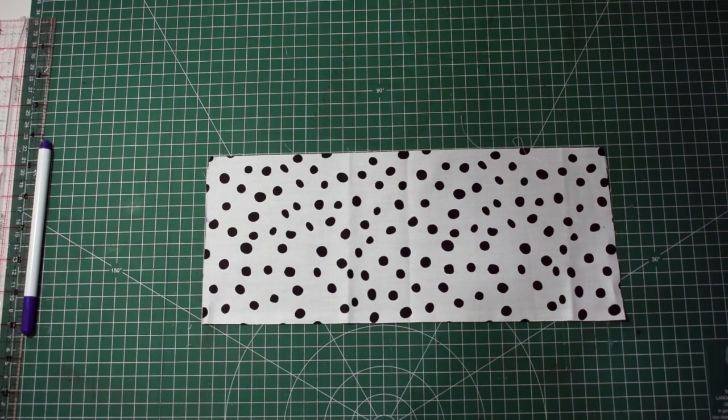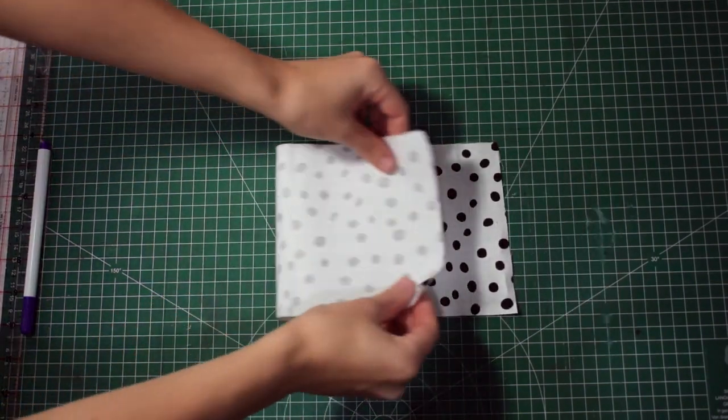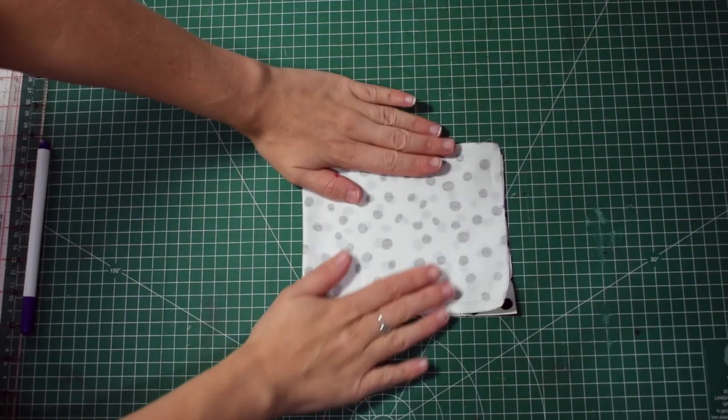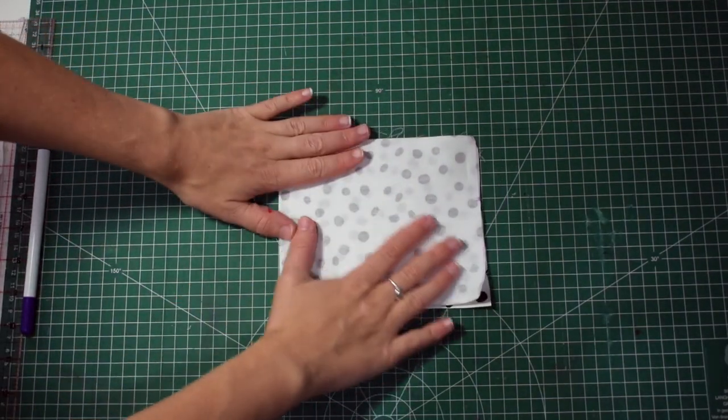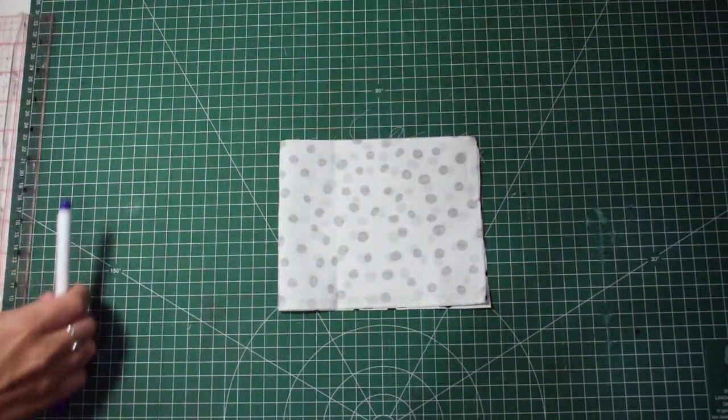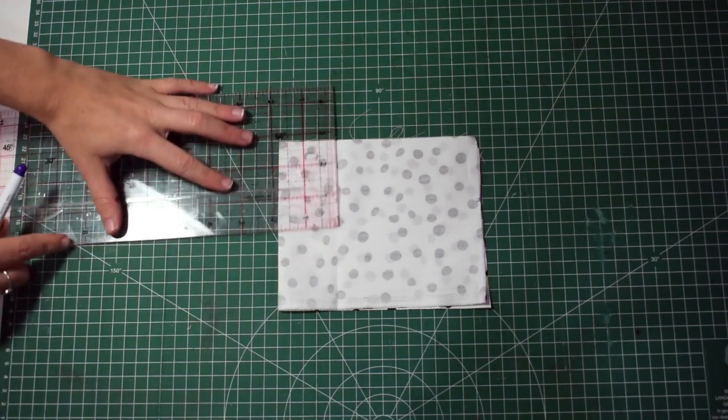We're going to move on to the big piece of fabric. We're going to fold this right sides together and then we're going to flatten this out. From the folded edge we're going to measure up by 1 inch and mark this out.